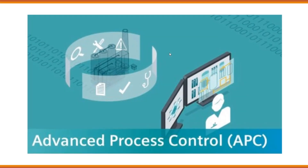First is Advanced Process Control, or APC. APC refers to advanced control strategies and techniques used to optimize and improve the performance of industrial processes. It involves implementing sophisticated control algorithms and models to achieve better process stability, efficiency, and product quality.